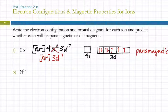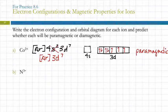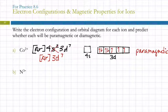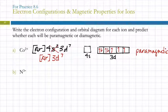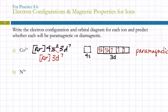A helpful memory trick: paramagnetic is spelled P-A-R, not P-A-I-R. Diamagnetic — 'di' means two — all the electrons come in by 2s, all paired up. Diamagnetic means all paired up and not attracted to a magnetic field. Paramagnetic arises from those unpaired electrons.